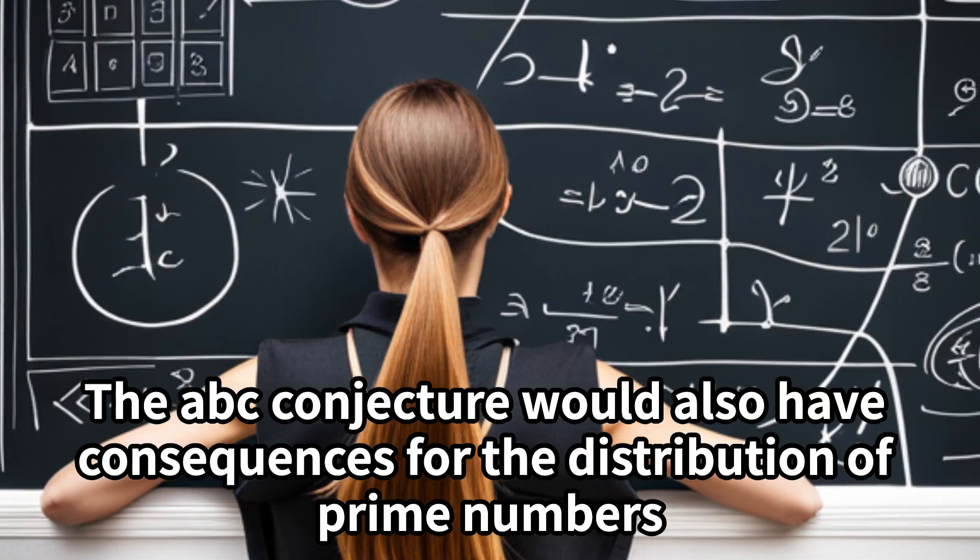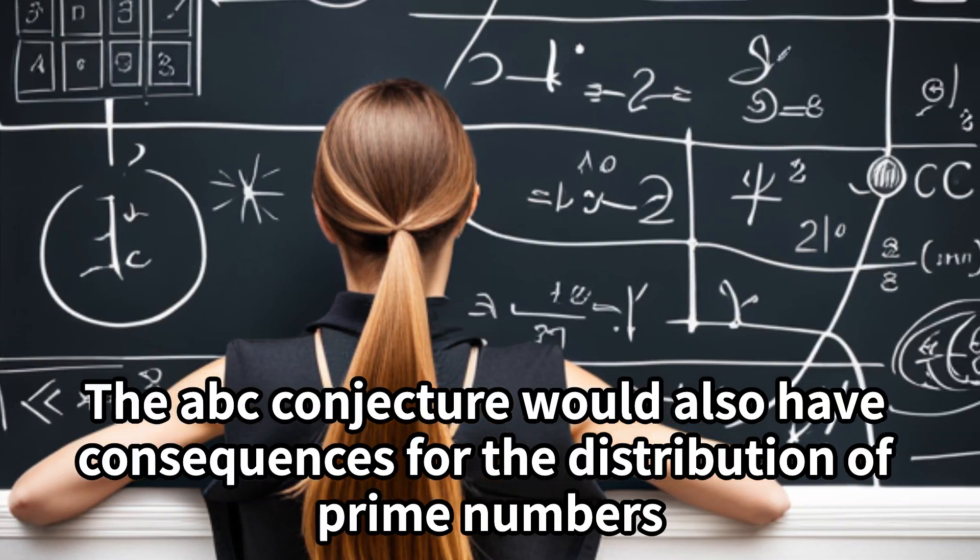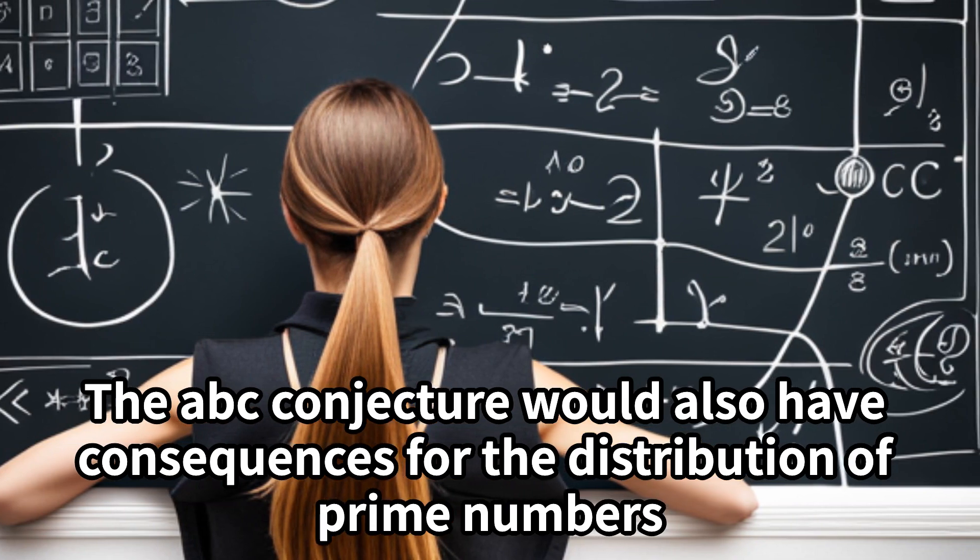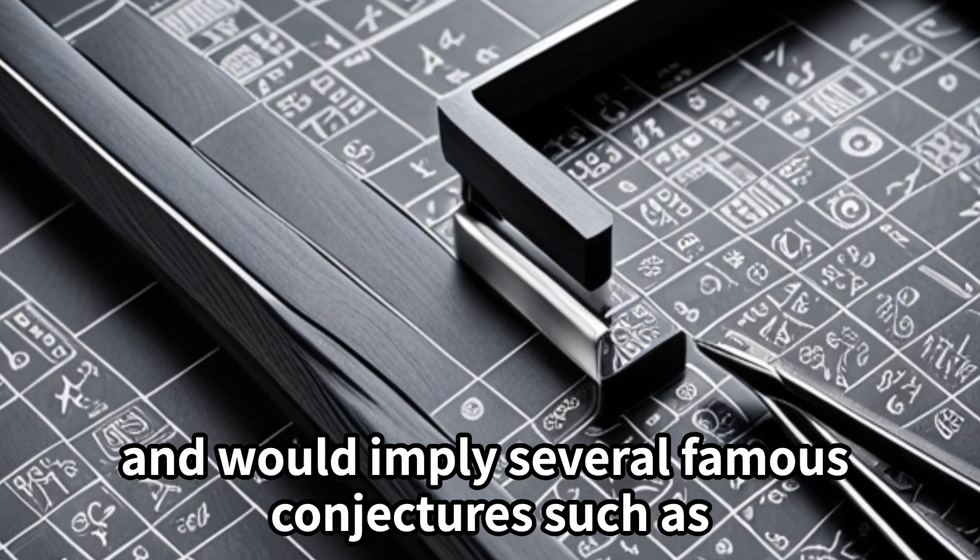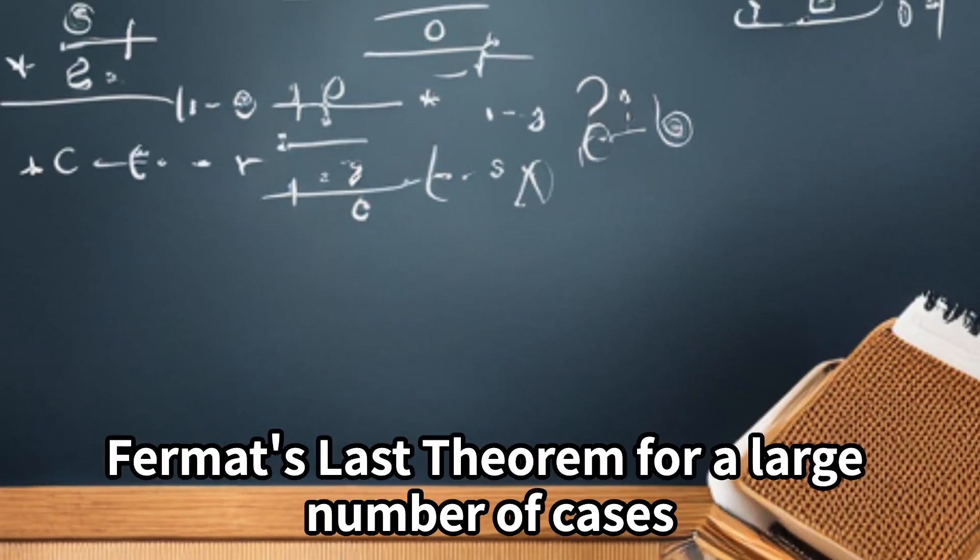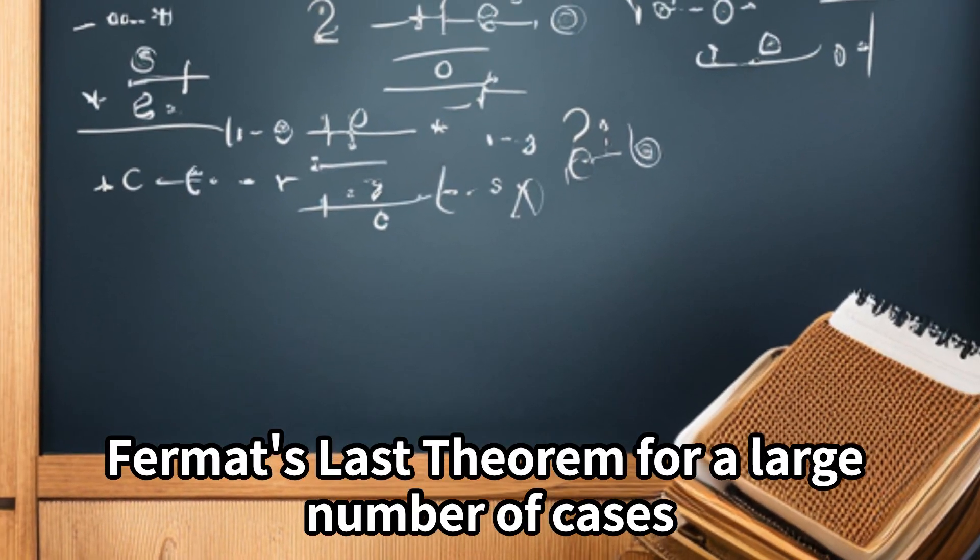The ABC conjecture would also have consequences for the distribution of prime numbers and would imply several famous conjectures such as Fermat's last theorem for a large number of cases.